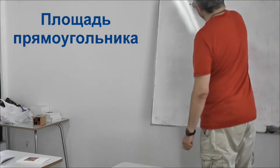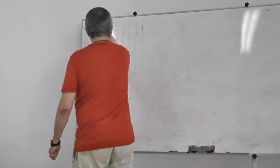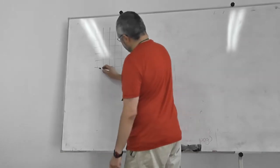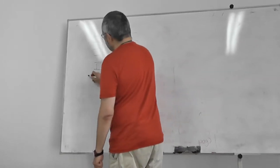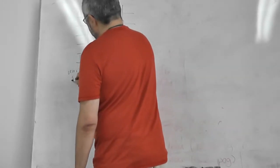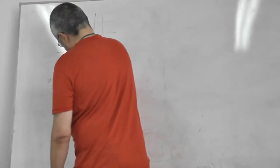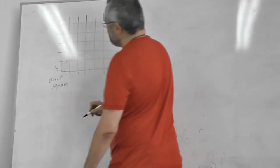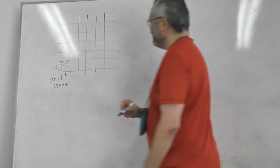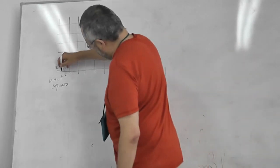So imagine we have a board with squares. And so this is a unit square. So it's just one meter and one meter. And this is one square meter.